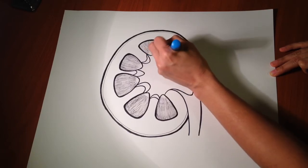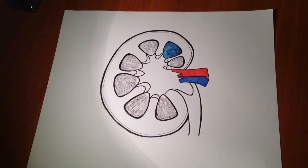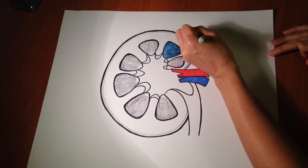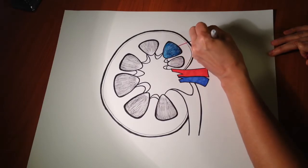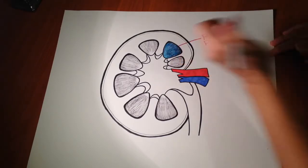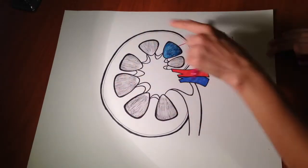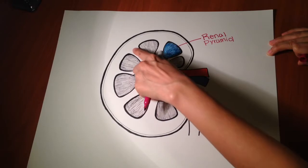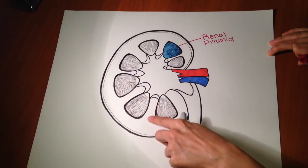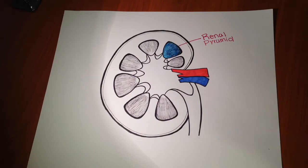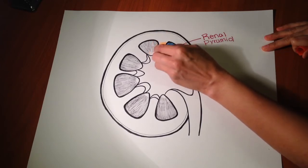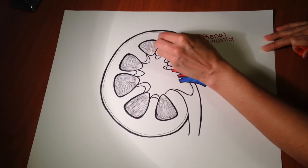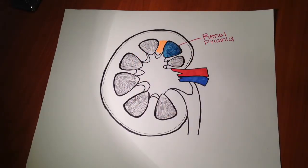So this is the renal pyramid. And in between the pyramids you're gonna have these spaces over here, these are the renal columns. I'll use a different color. And there is the renal column.